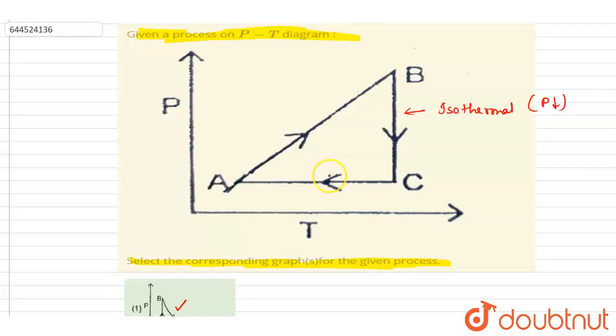So BC process isothermal, only one option. So A to C is isobaric